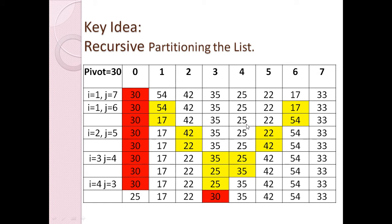Again moving i from left to right, looking for an element greater than the pivot — we stop at i equals two. Moving j from right to left with j minus minus, we find an element smaller than the pivot and stop at j equals five. Then we swap those two elements: 22 comes here and 42 goes there.